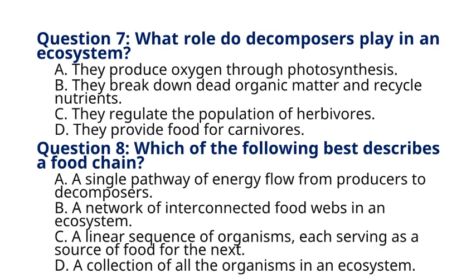Question 8. Which of the following best describes a food chain? A. A single pathway of energy flow from producers to decomposers. B. A network of interconnected food webs in an ecosystem. C. A linear sequence of organisms, each serving as a source of food for the next. D. A collection of all the organisms in an ecosystem. The correct answer to question 8 is option C. Explanation: A food chain illustrates the transfer of energy and nutrients from one organism to another in a linear sequence.